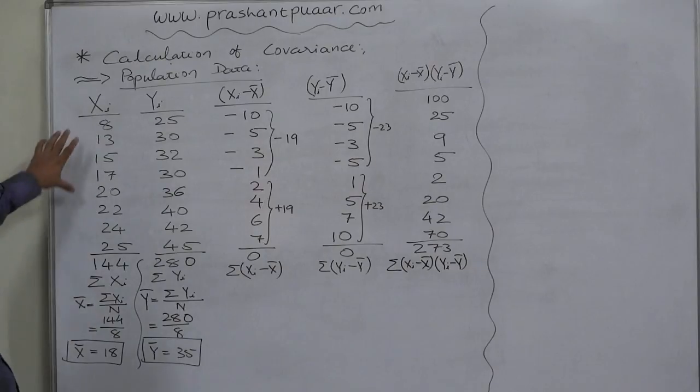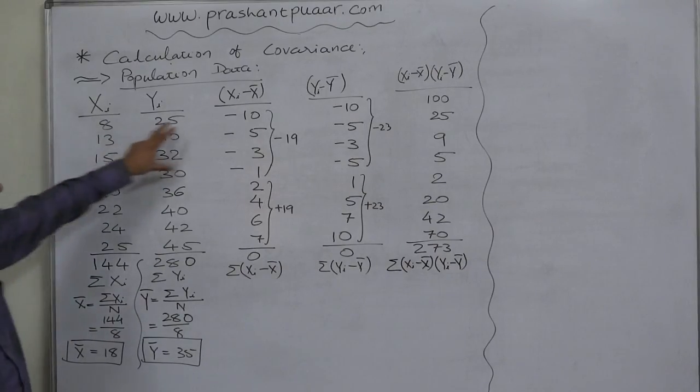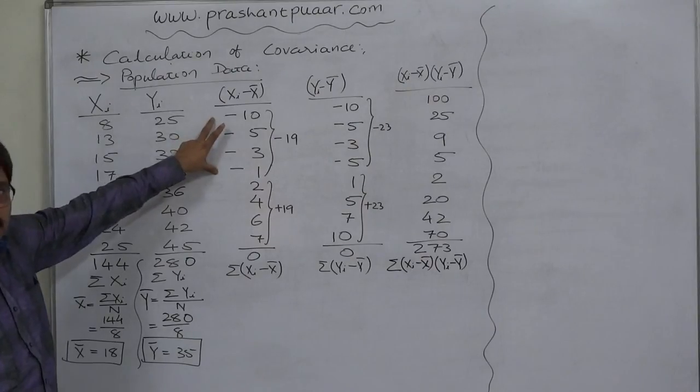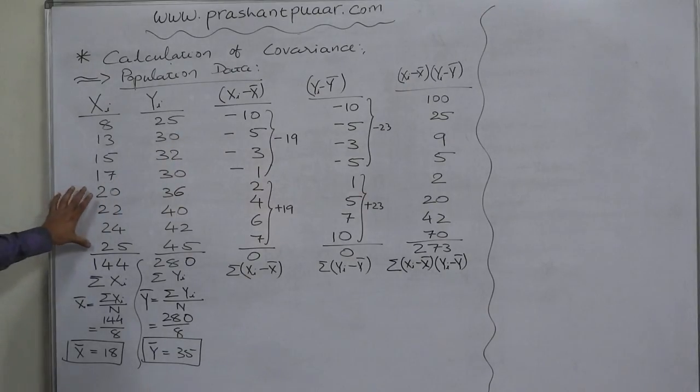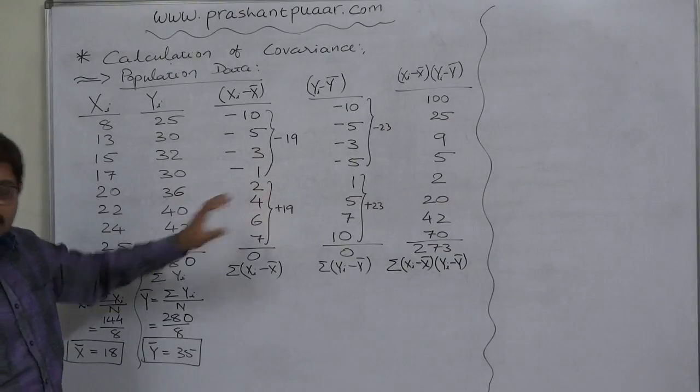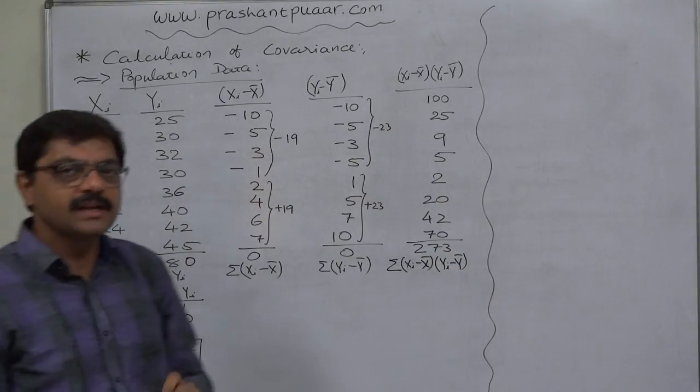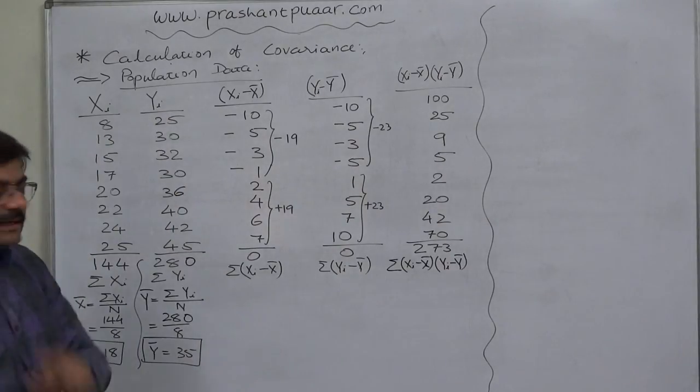See, small thing. When the value of the variable is less than mean, we get the negative deviation x minus x bar, and when the value of the variable is greater than mean, we get the positive deviation. This is very small thing, but for the correctness of our calculations, it is remarkable.